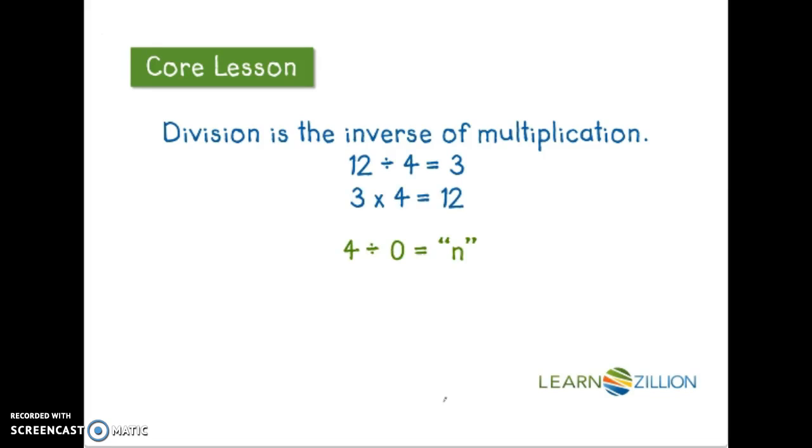If we had a question like 4 divided by 0, whatever the answer was, we should be able to do the opposite operation and get 4 as an answer. Whatever number times 0 should equal 4. But we know that any number times 0 is 0. So we couldn't get an answer of 4, which means something doesn't work here. Which is why dividing by 0 is impossible or undefined.